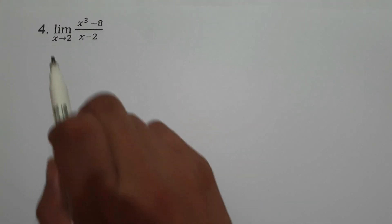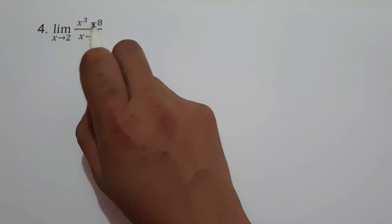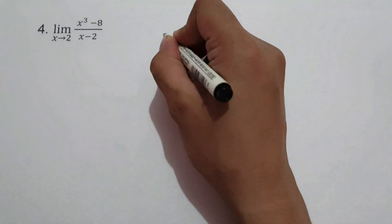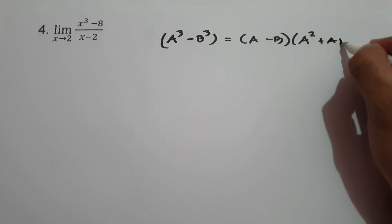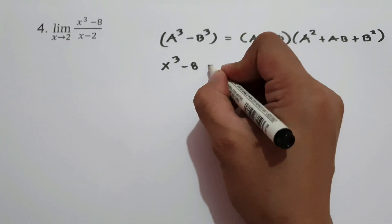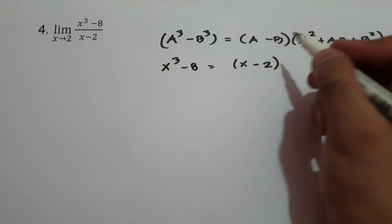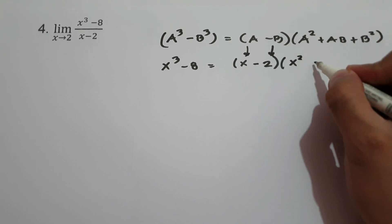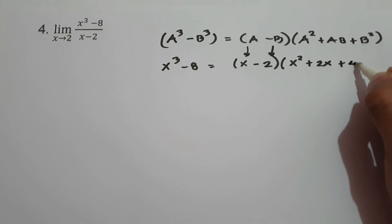On example number 4, we have the limit of x cubed minus 8 all over x minus 2 as x approaches 2. As you can see, x cubed minus 8 is in the form of a cubed minus b cubed. And a cubed minus b cubed equals a minus b multiplied by a squared plus ab plus b squared. The cube root of x cubed is x, and the cube root of 8 is 2, so a equals x and b equals 2.